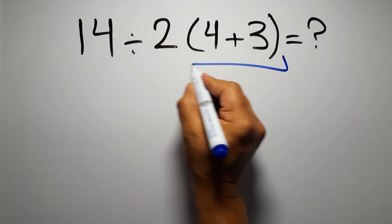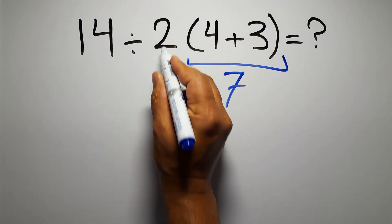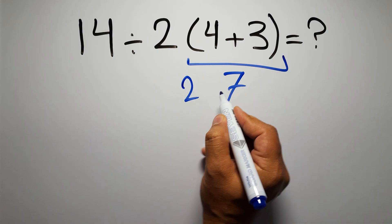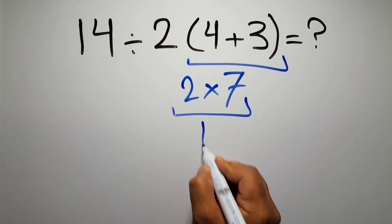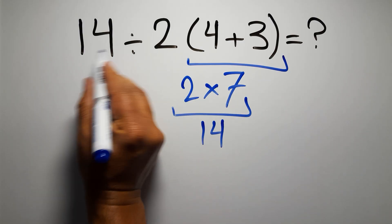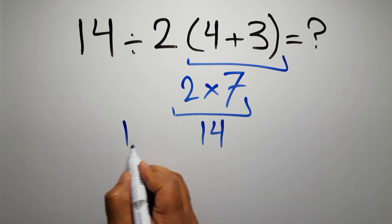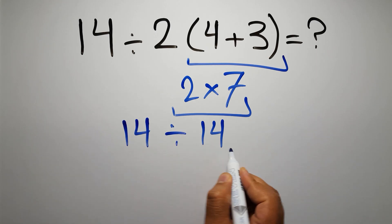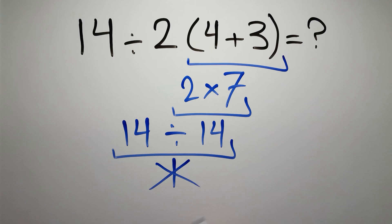4 plus 3 gives us 7, and 2 times 7 equals 14, so 14 divided by this, 14 divided by 14 is just 1, but this answer is not correct.